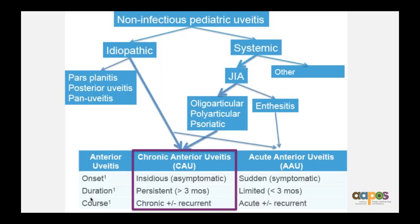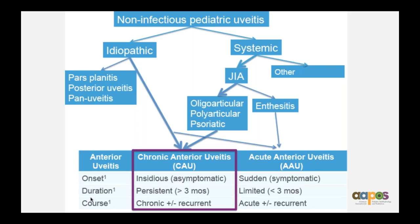Now segueing into the main part of the discussion: having ruled out infection, we're focusing on non-infectious pediatric uveitis, specifically the subtype of chronic anterior uveitis — associated with JIA or idiopathic. This is insidious, persistent, chronic, and recurrent, and is a major cause of vision loss in our children.